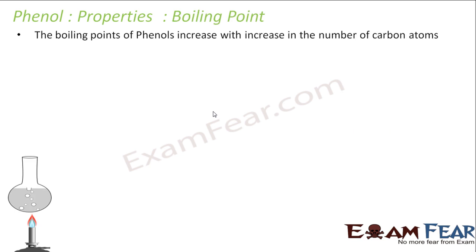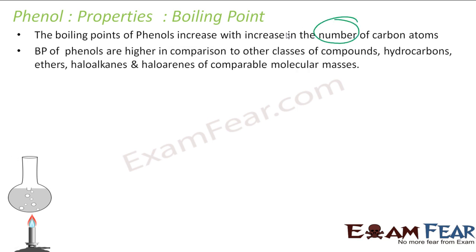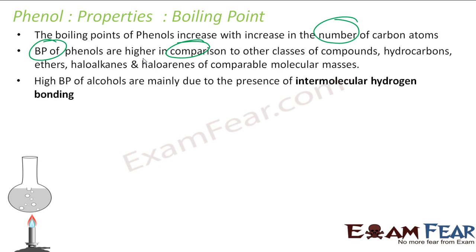For boiling point, the general rule is that boiling point increases with an increase in the number of carbon atoms, that is, as molecular mass increases, boiling point increases. The second point is that the boiling points of phenols are generally higher when compared with compounds of comparable molecular mass, and that is because of intermolecular hydrogen bonding.